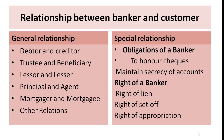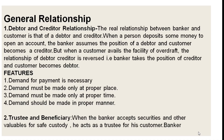Next: the relationship between banker and customer. There are two types of relationships: first, general relationship; second, special relationship. General relationship includes: debtor and creditor relationship, trustee and beneficiary, lessor and lessee, principal and agent, mortgagor and mortgagee, and other relations. Special relationship covers: obligations of a banker — to honor checks and maintain secrecy of accounts; and rights of a banker — right of lien, right of set-off, and right of appropriation.